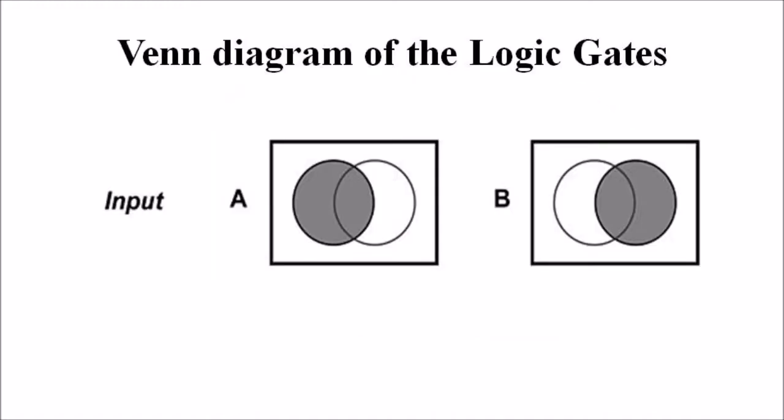These Venn Diagrams can be used to represent the logic gate functions. Let us consider the two input functions, that is A and B, which can be represented in the Venn Diagram as shown in this figure. Here we can see a rectangle in which there are two circles — the leftmost circle represents variable A and the right one represents variable B.